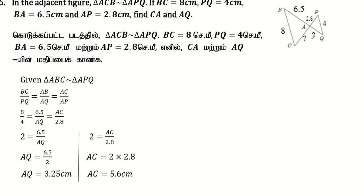Given the similar triangles ABC and PQ, we have the corresponding sides: BC corresponds to PQ, AB corresponds to AP, and AC corresponds to the unknown we're solving for.